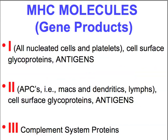MHC molecules are generally divided into three different types. Type 1 molecules are proteins and antigens on the surfaces of almost all nucleated cells, including platelets. Type 2 molecules are chiefly on the antigen-presenting cells like the macrophages or histiocytes, whether dendritic or not, as well as some lymphocytes — these are the immune cell expression of MHC molecules. The complement system proteins are considered the third class; they are not cell-surfaced at all but are involved in the cascade of complement of 20 or so factors, which will ultimately result in lysis of the cell membrane.